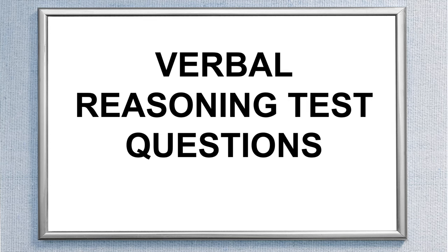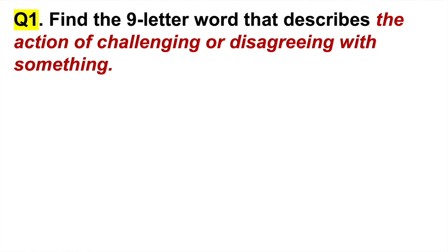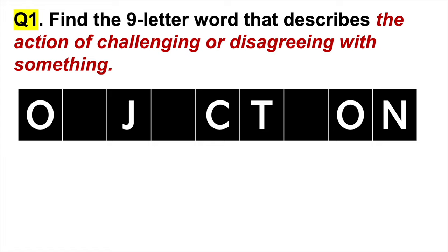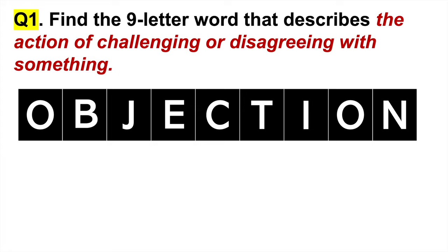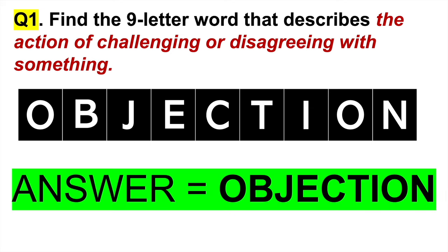The first section of this psychometric test tutorial is verbal reasoning. Here is an example question: find the nine-letter word that describes the action of challenging or disagreeing with something. We are given six letters and have to decide which letters go in the blanks. The word is objection — objection describes the action of challenging or disagreeing with something. Remember, you have to answer these as fast as possible.